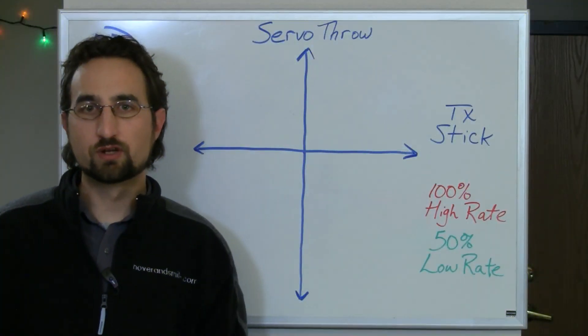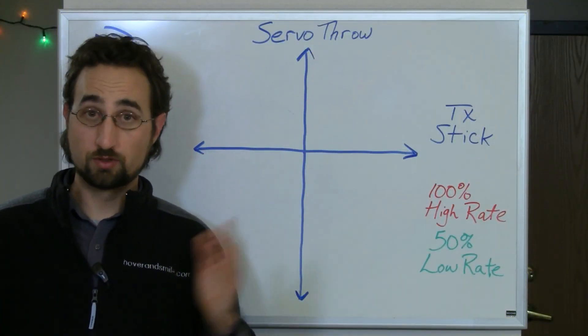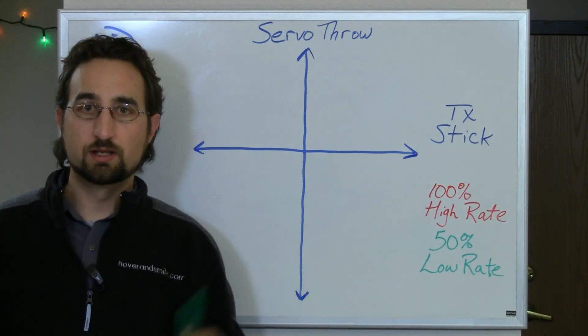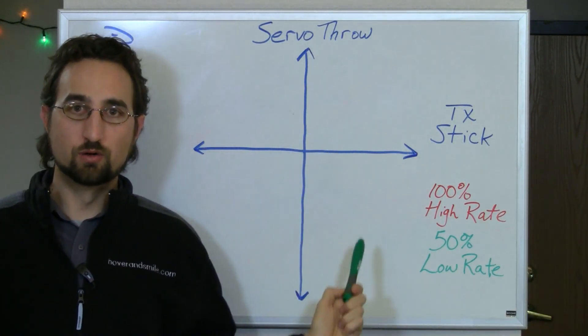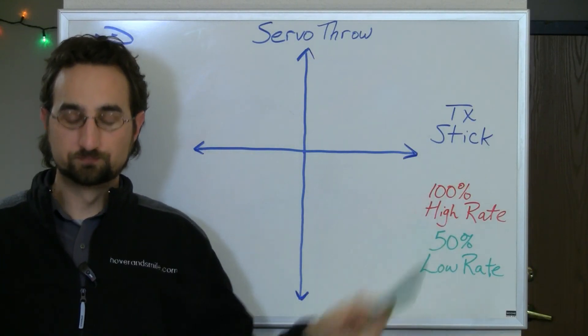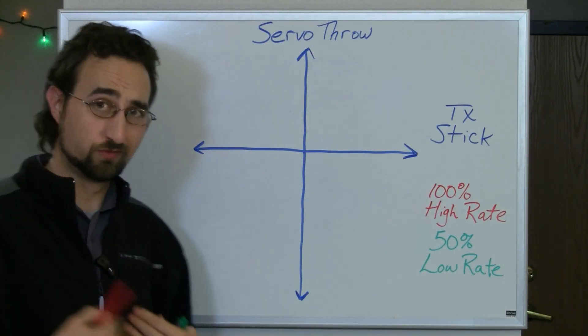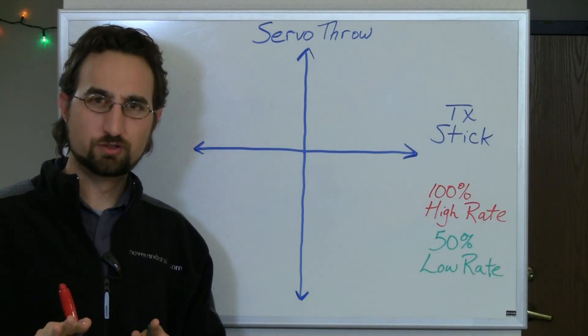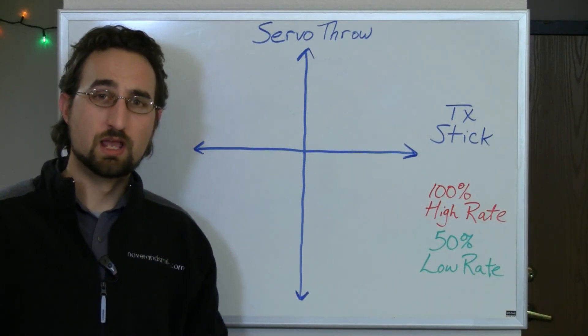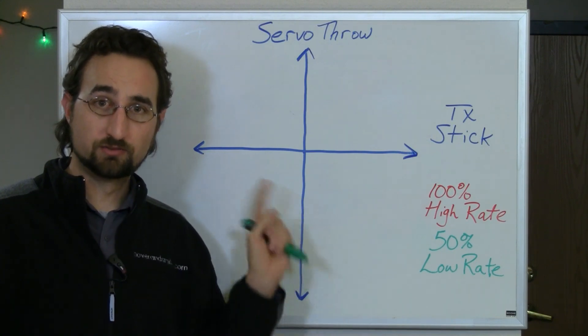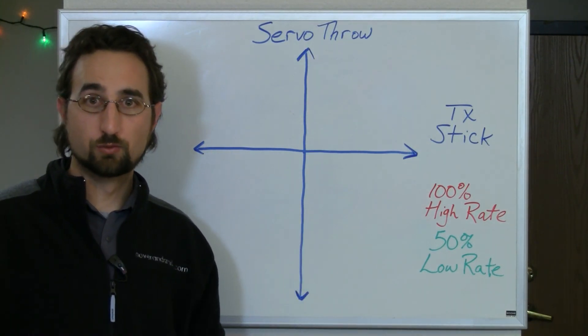Now that we've had that brief refresher on servos and servo throw, defining that term, we can now take a look at this graph that graphs servo throw and transmitter stick movement. I'm a math geek, so this kind of is cool for me, but if it's not cool for you and graphs, just sit through it for a minute and we'll go over a video introduction that explains the same thing, but with an actual servo and transmitter.